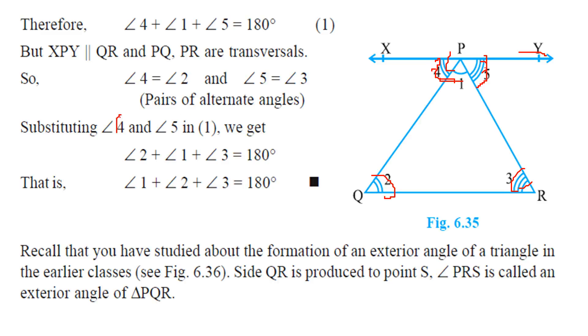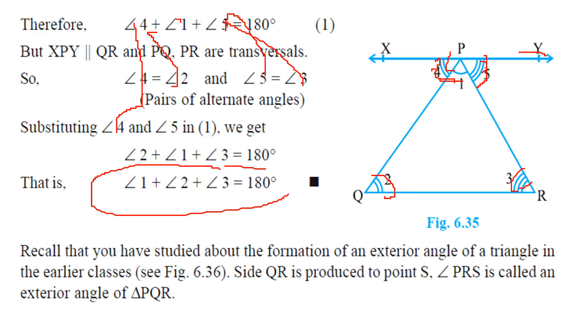Substituting: we put angle 2 in place of angle 4, and angle 3 in place of angle 5. So angle 1 plus angle 2 plus angle 3 is equal to 180 degrees. This is the angle sum property.